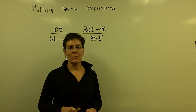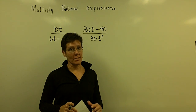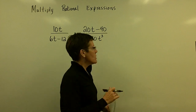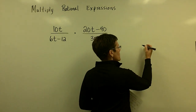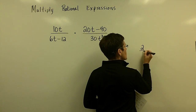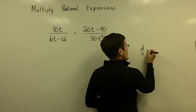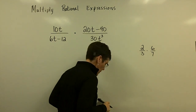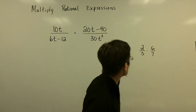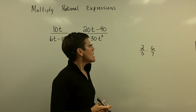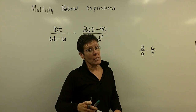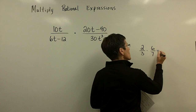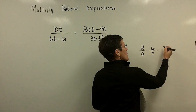Let's multiply some rational expressions, which, remember, is just like multiplying fractions. I want to remind you that when you multiply the fractions 2/3 times 6/7, we have two approaches to that. I prefer the removing-the-common-factor approach, but many people don't do that — they just multiply straight across.